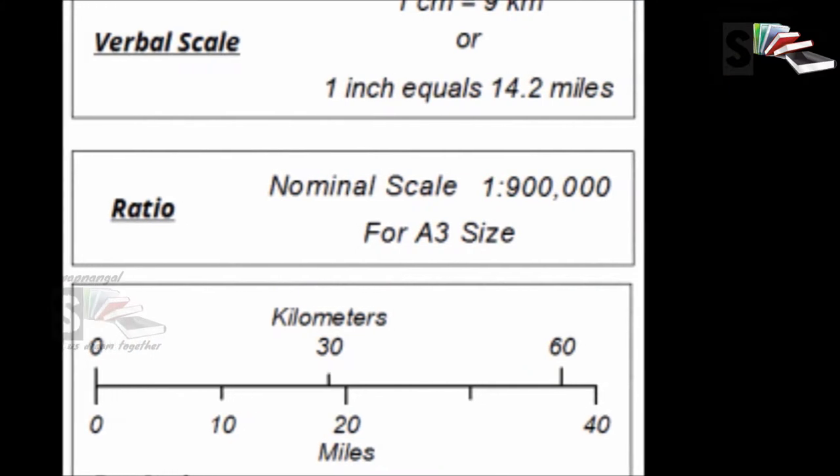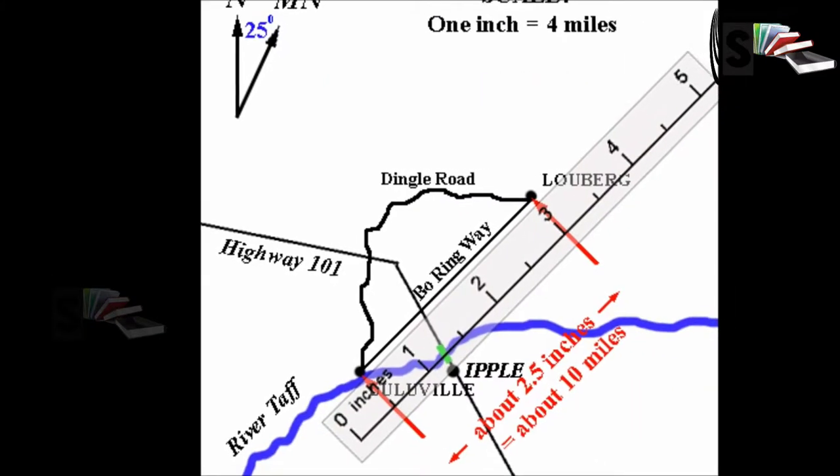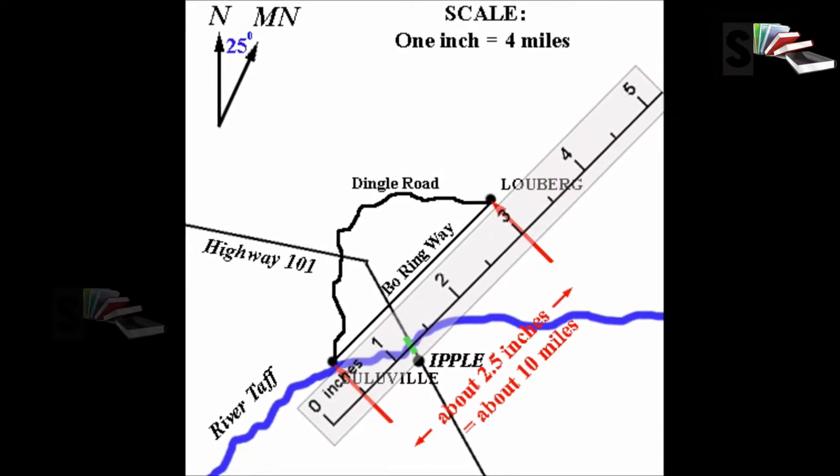When we want to know the actual distance on land, we use map scales. On maps, there are scales. The scales help us to work out the actual distance on land.